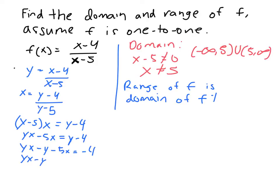So I'll have yx equals 5x. I'm going to add 5x to both sides. All right, and then I'm going to pull out the y, so I'll have y times x minus 1 equals 5x minus 4.